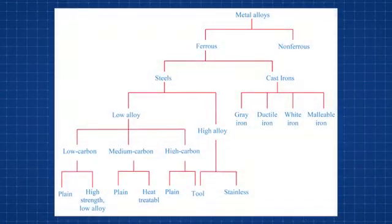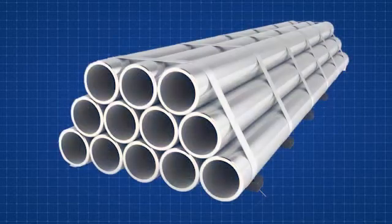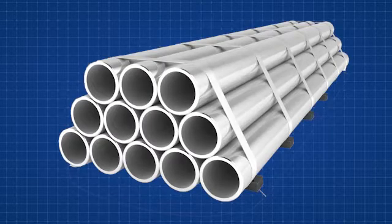Steel alloys are an extremely versatile group of materials. Chief among the sources of this versatility is the ability to control the microstructure of components through judicious heat treatment. Not all alloys are easily hardened by heat treatment, so hardenability is a basic property of a ferrous alloy which should be characterized.